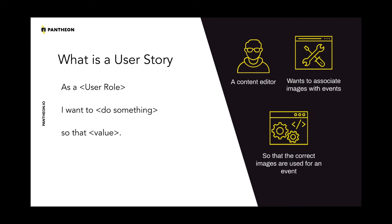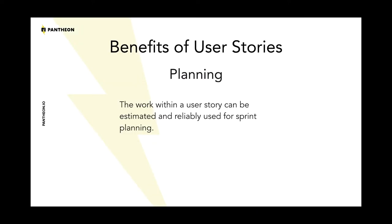I think we're all very familiar with user stories: as a user role, I want to do something so that some value is achieved. For our example here, we've got: as a content editor, I want to associate images with events so that the correct image is used for an event — so they're not mismatched. The question is, is that something you could actually deliver with confidence? Does it have enough information? Is everything there that you would actually need to put that in place for your project?